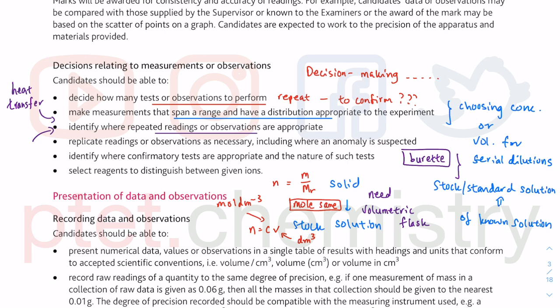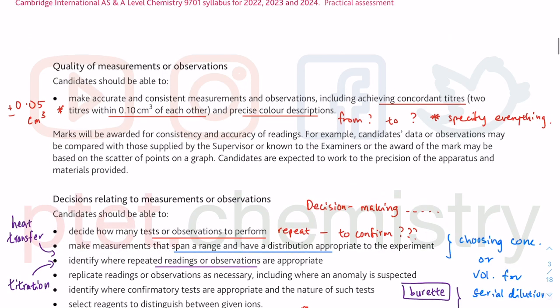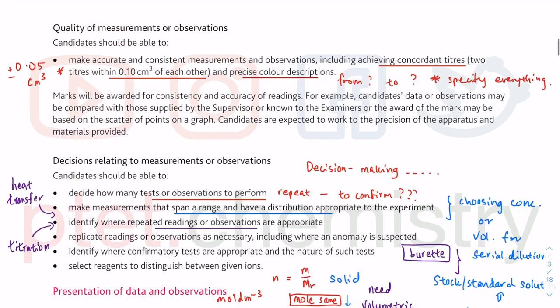You can improve accuracy by doing it a couple of times and taking averages — for temperature and for titration, where you have to repeat until you get consistent titres within plus or minus 0.10 cm³. You pick only the best titres that are within this range.